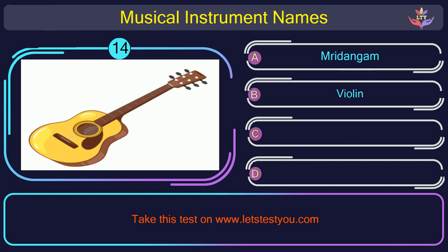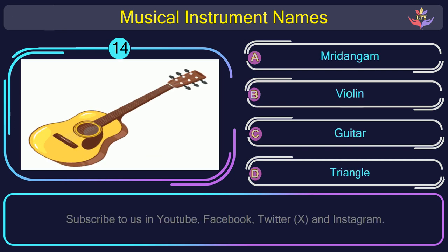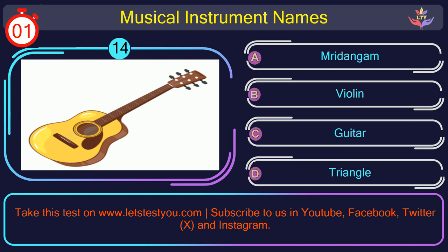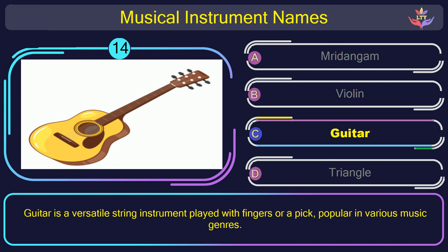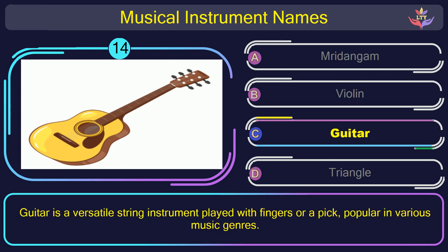Question number 14. Guess the name of the musical instrument in this picture. The correct answer is option C: Guitar. Guitar is a versatile string instrument played with fingers or a pick, popular in various music genres.